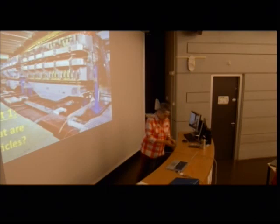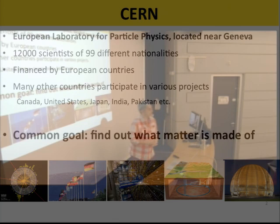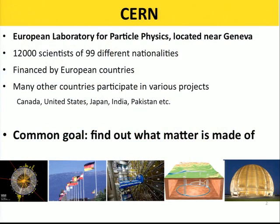My name is Pauline Gagnon and I'm a physicist here on the ATLAS experiment at CERN. CERN is this European laboratory for particle physics located near Geneva in Switzerland. There are 12,000 scientists working here coming from 99 different nationalities. It's financed by European countries but there are many other countries participating in the research, for example, Canada, United States, Pakistan, India. Lots of countries in fact.